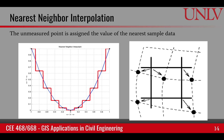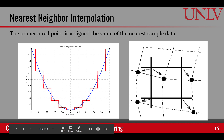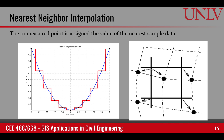In the case of nearest neighbor interpolation, the unmeasured point is assigned the value of the nearest sample. So let's say these dots are where we have measured some values and we are forming a grid — these intersections are our unknown values. We have a choice between two neighbors, and clearly the closest one is the nearest neighbor, so that value will be assigned to that grid point.